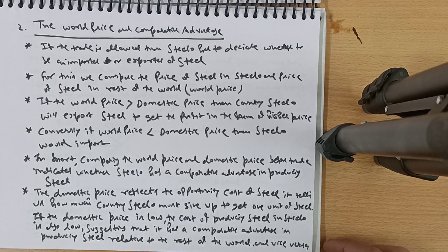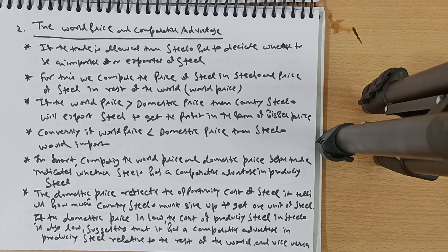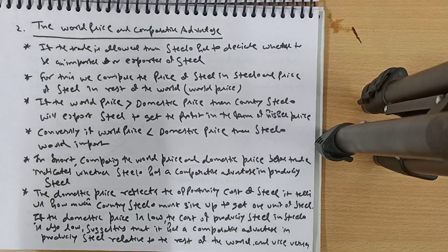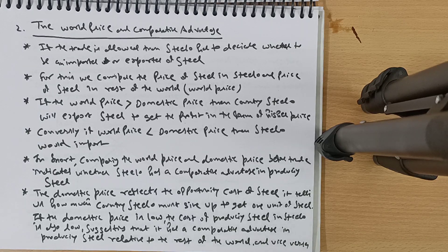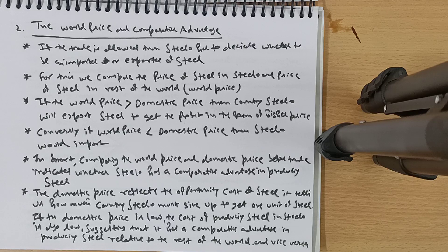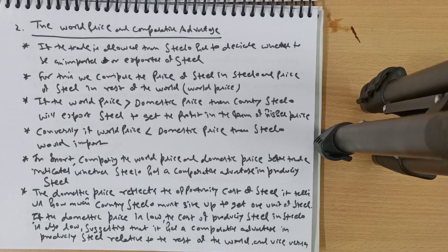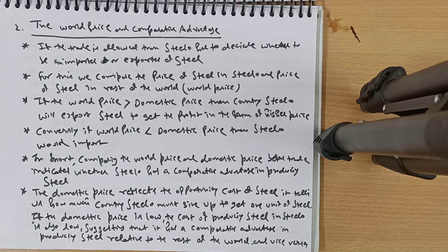If trade is allowed, Steelo has to decide whether to be an importer or exporter of steel. For this, we compare the price of steel in Steelo and the price in the rest of the world, called the world price. If the world price is greater than the domestic price, country Steelo will export steel to get profit from higher prices. For example, if domestic price is 8 rupees and abroad it's 10 rupees, it makes sense to become an exporter. Conversely, if world price is less than domestic price, Steelo would import.